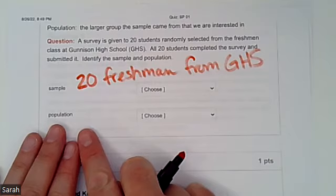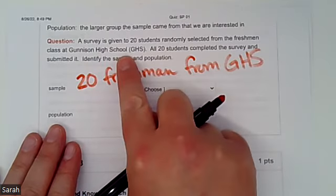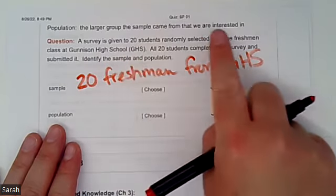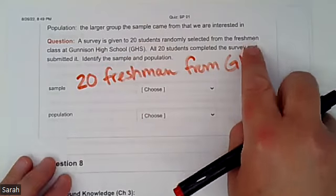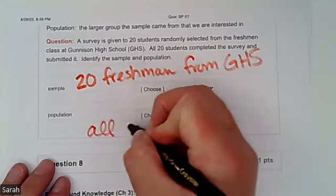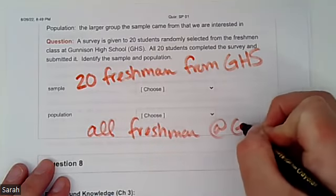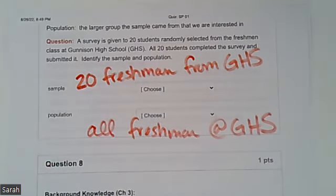And then our population here. So we only took students out of Gunnison High School. So it's going to have to do something with Gunnison High School. And then we were selecting from the freshman class. So our population here might be all freshmen at Gunnison High School. All right.